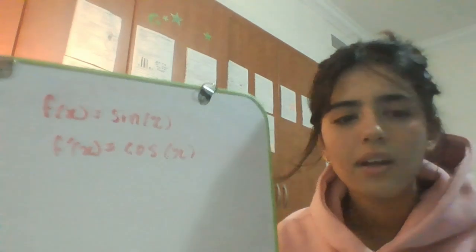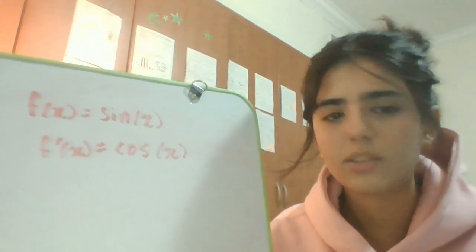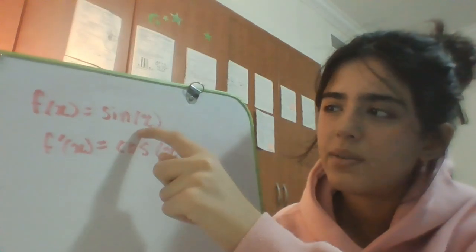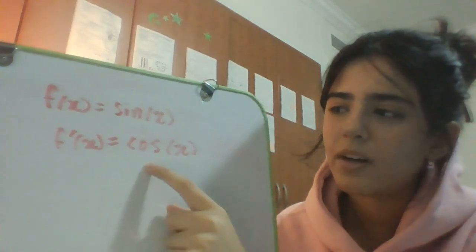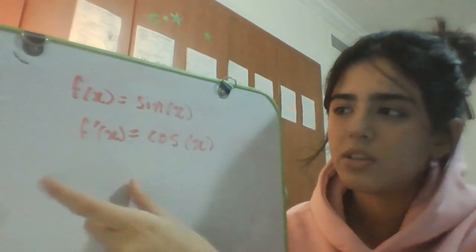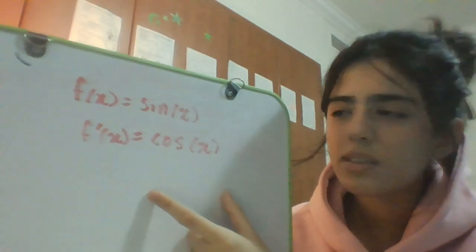For the second example we're going to be using a trig function. In my last videos I taught you guys how to take the derivative of a trig function. You know that the derivative of sine is just cos, so f'(x) = cos(x). Now the second step is making f'(x) equal to zero, so 0 = cos(x). This is a little bit different.